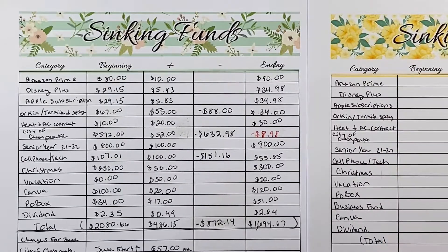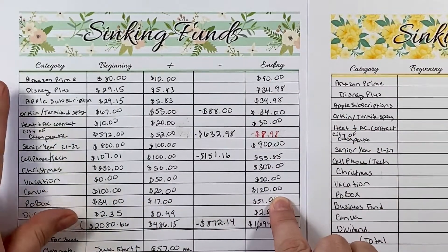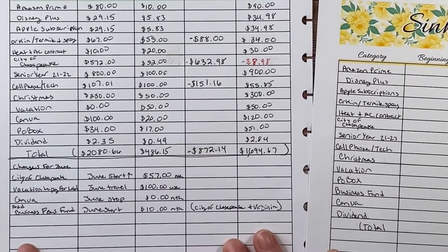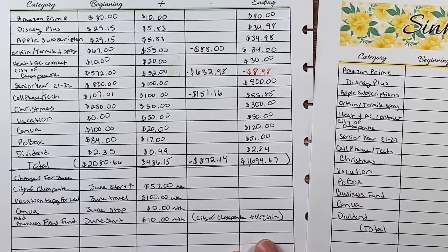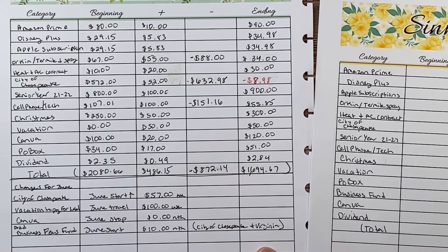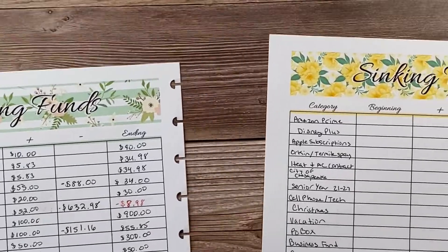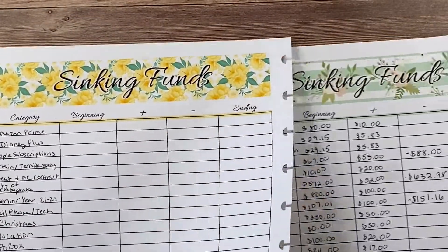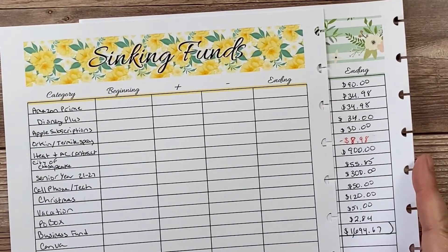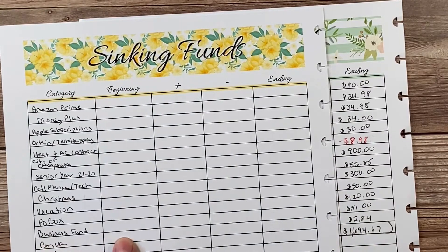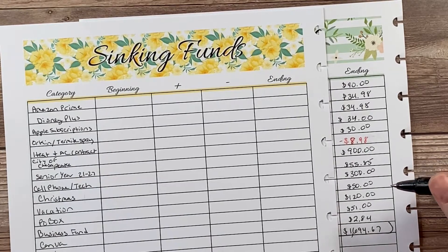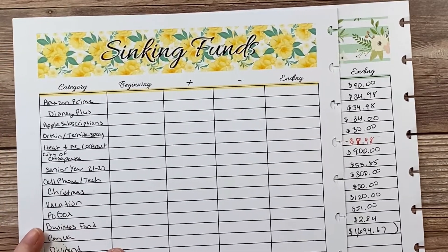I'm back. I've gone ahead and written down all my categories for my sinking funds. You're going to look at the ending balance for all the same categories and then any adjustments I made — some stopped, some increased, and one is new that I'm just starting this month. I'm going to slide this under and transfer these balances, lining them up. I need to pay attention because I'm not adding anything to Canva and I put them in a slightly different order.